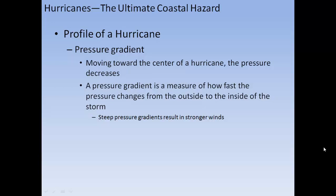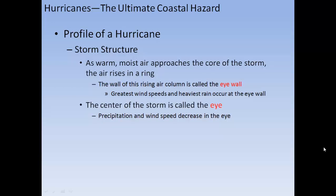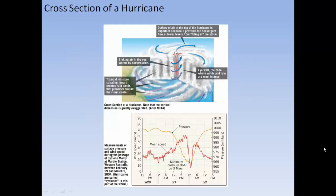Moving toward the center of a hurricane, pressure decreases dramatically. The pressure gradient measures how fast pressure changes from the outside to the inside of the storm — steep pressure gradients result in stronger winds. As warm moist air approaches the core, air rises in a ring called the eye wall, where the greatest wind speeds and heaviest rain occur. In the middle of the eye wall is the eye, where precipitation and wind speed decrease. The strongest winds are right in the eye wall, and the weakest winds are in the center of the eye.